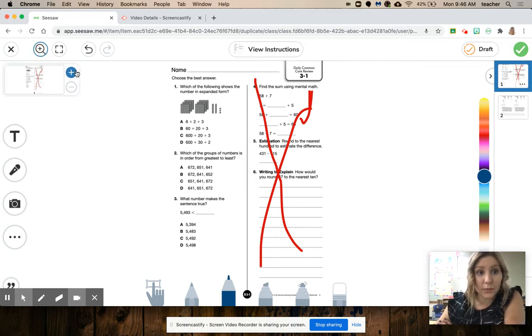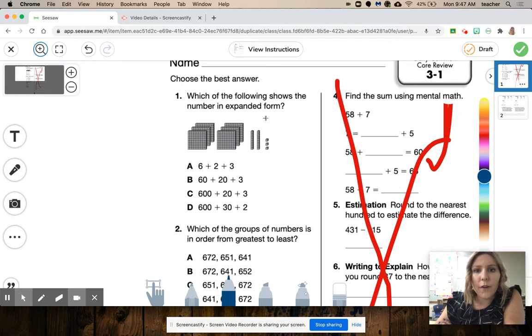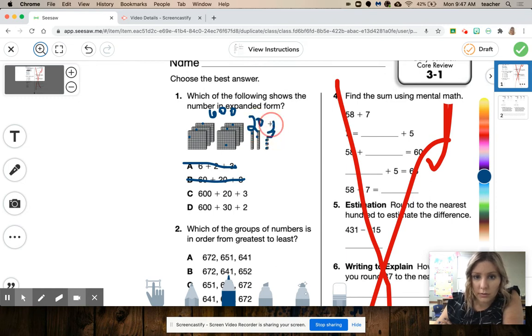Number one, I'm going to zoom in so we can see a little bit better. Which of the following shows the number in expanded form? So I'm going to look at my hundreds first. 100, 200, 300, 400, 500, 600. So I look at my choices. The only two that have 600 are C and D. So I know it's not A and I know it's not B. Now I look at my tens. I have 10, 20, and then my ones, 21, 22, 23. So I have 620 and three. Which one matches? They're both really close. But if you look carefully, the answer is C because this one says 30 and it's not 30.